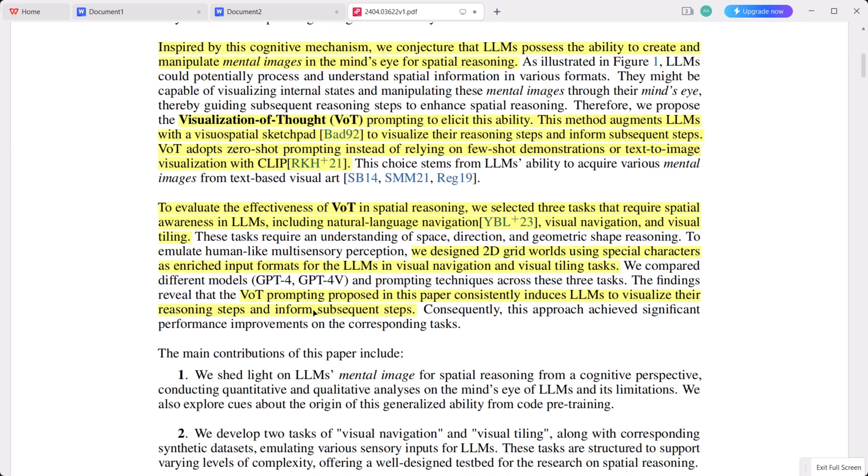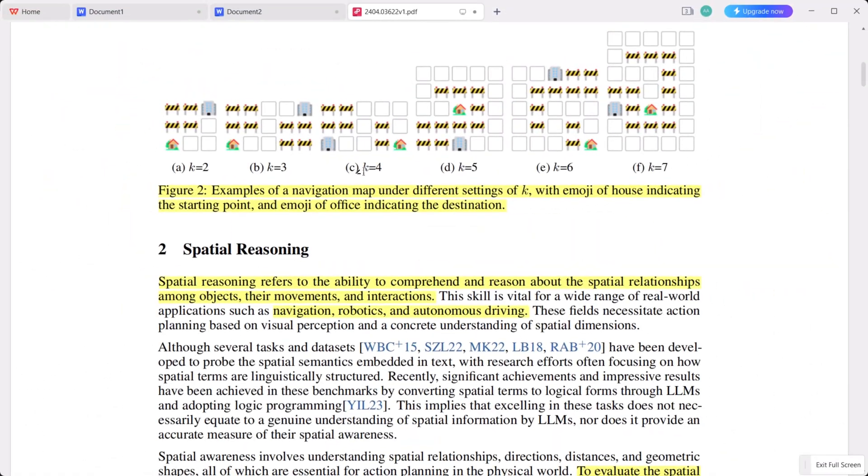Vote prompting proposed in this paper consistently induces LLMs to visualize the reasoning steps and inform subsequent steps, and consequently, this approach achieved significant performance improvements on the corresponding tasks. Let's examine these various 2D grids before us, each differing in size and containing various objects. Take for instance this example where k equals 2. The house serves as the starting point and the office the destination. We'll ask the large language model to navigate from the house to the office step-by-step, a simple task for humans. While more complex routes are possible, humans can often bypass step-by-step instructions and intuitively navigate directly through visual assessment. However, describing this process step-by-step is an exercise in spatial reasoning, which has traditionally been challenging for large language models, but this is starting to change.